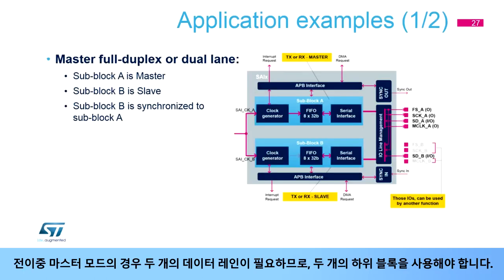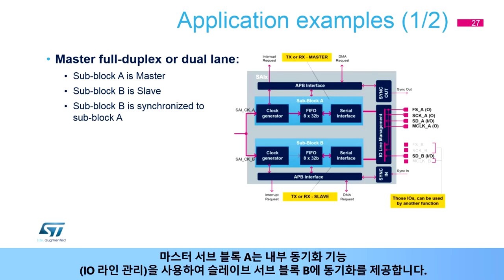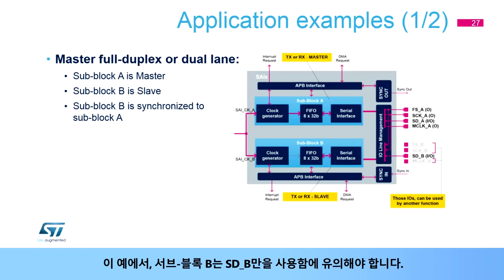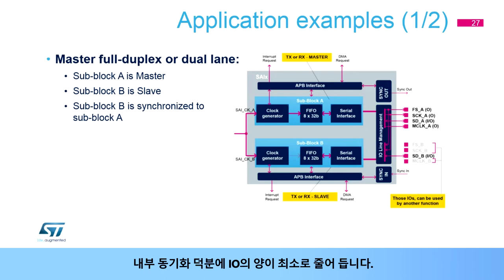For a full-duplex master mode, two data lines are needed, so two sub-blocks must be used. The master sub-block A provides synchronization to the slave sub-block B using the internal synchronization feature and I/O line management. In this example, sub-block B only uses SDB. The amount of IOs is reduced to its minimum thanks to internal synchronization.